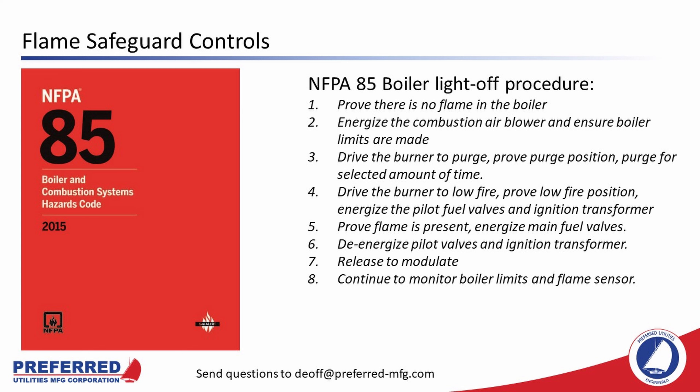After the furnace is completely purged, the flame safeguard drives the burner to low fire, proves low fire position, energizes the pilot fuel valves and ignition transformer, and then proves that the igniter flame is present before energizing the main fuel valves. Then the flame safeguard controller de-energizes the pilot valves and ignition transformer and releases to modulate — which turns control of the fuel-air ratio over to a different controller. Once released to modulate, the flame safeguard continues to monitor the boiler limits and flame sensor.